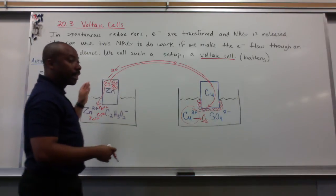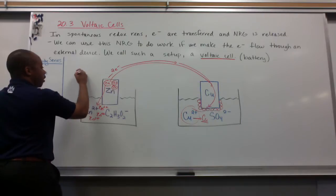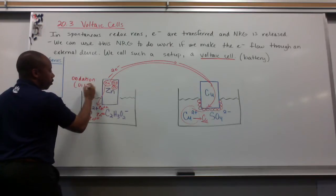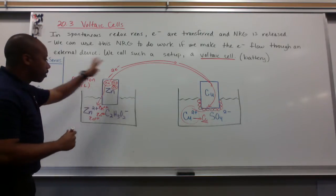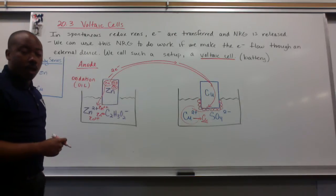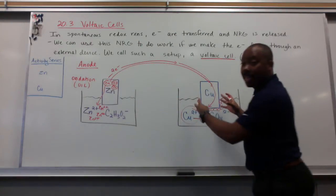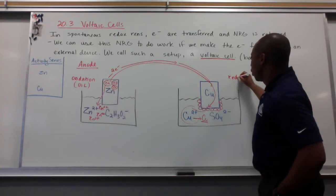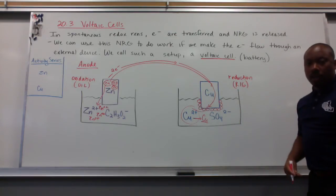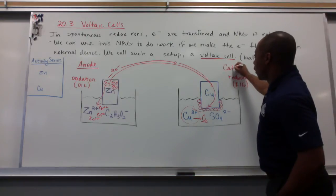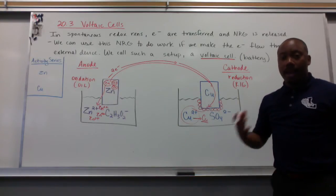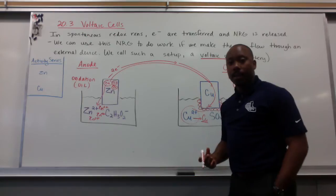In this half cell, since I have electrons leaving, this is where oxidation happens. So this is the oil in oil rig. We call the site where oxidation happens the anode. Over here, where my half cell is gaining electrons, obviously we know that's called reduction. This is the rig portion of my half cell. And reduction happens at the cathode. I'm sure you've heard those words before. Cathode or anode or cathode ray tube back in the day.